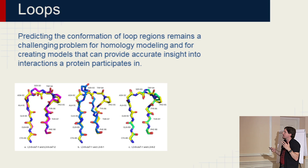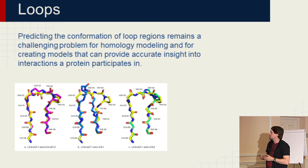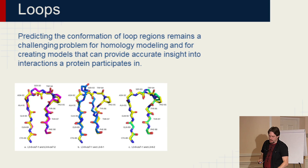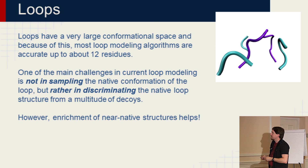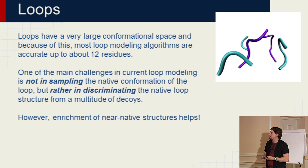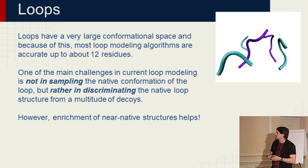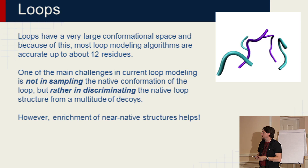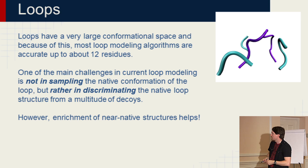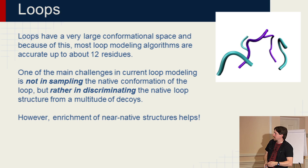Loops are a really key part of a modeling problem because the conformation of loops has remained challenging for homology modeling, and loops can be really important for interfaces and other interactions. They have a very large conformational space, and because of this it's hard to get accuracy beyond about 12 residues currently. One of the biggest challenges is not actually the sampling problem but the discrimination problem — we're really good at putting the loop in all the different possible positions, but the question is figuring out which one is actually the native loop structure from thousands of decoys.